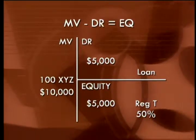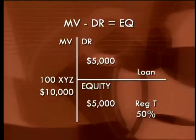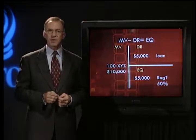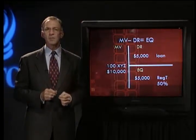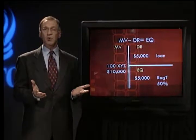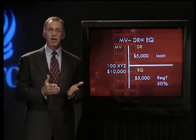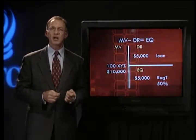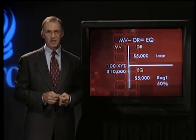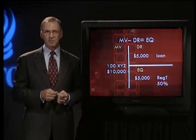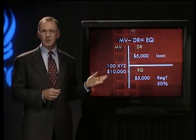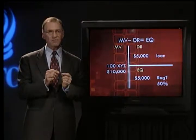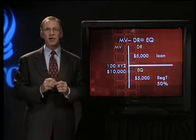The balance sheet shows the value of what the customer owns, the amount owed to the brokerage firm as the debit balance, and the customer's equity. Notice that if the customer sold the stock immediately, they'd receive $10,000, $5,000 of which would pay off the loan and $5,000 would be the equity returned. The relationship — market value minus debit balance equals equity — always has to hold true, helping us track changes in the account.